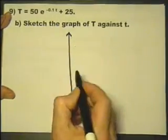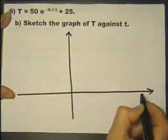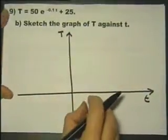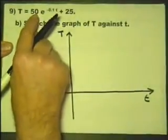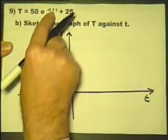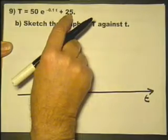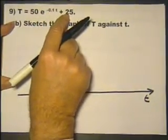So let's consider this and this. Instead of the X and Y axis, this is going to be the little t axis and the big T axis. So we need to look at how these pieces of information transform our basic graph. What does that 50 do? What does that minus 0.1 do? What does that 25 do?